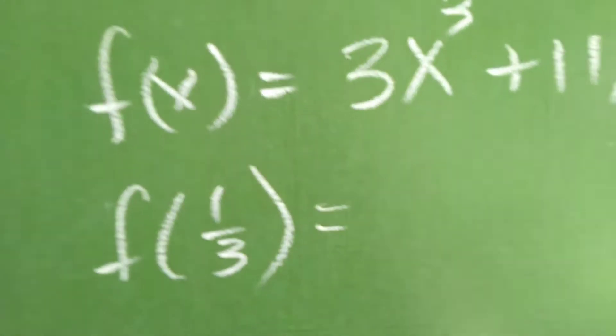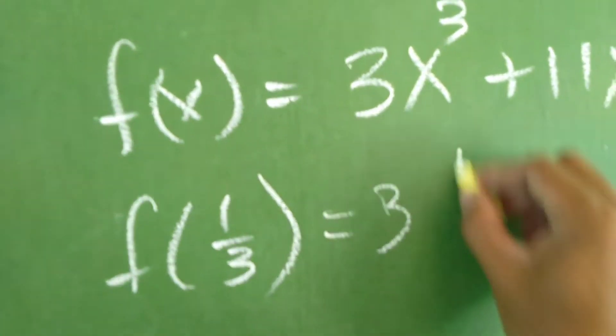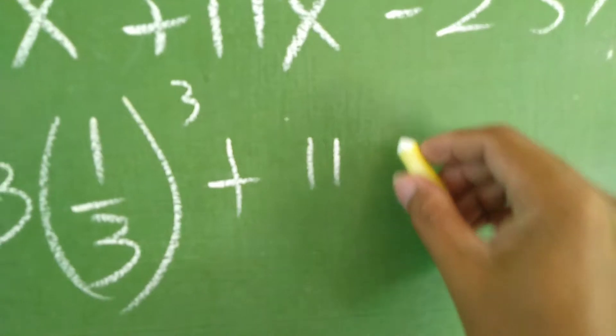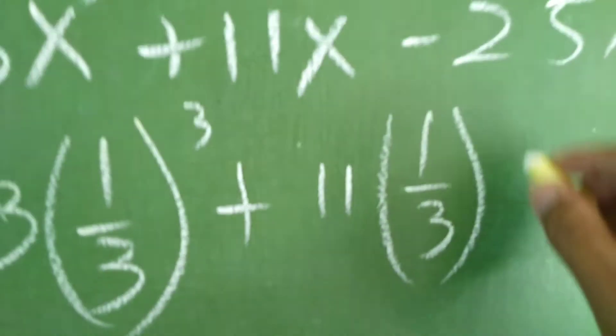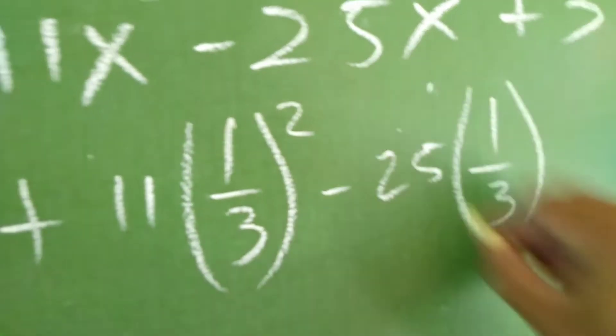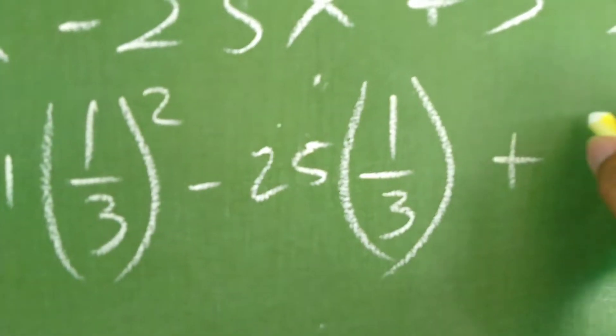We have substitute na natin. 3, 1/3 cube plus 11, 1/3 squared minus 25, 1/3 plus 3.